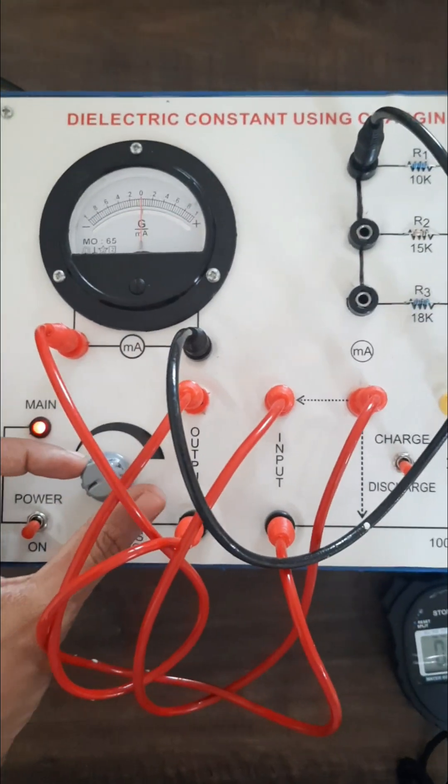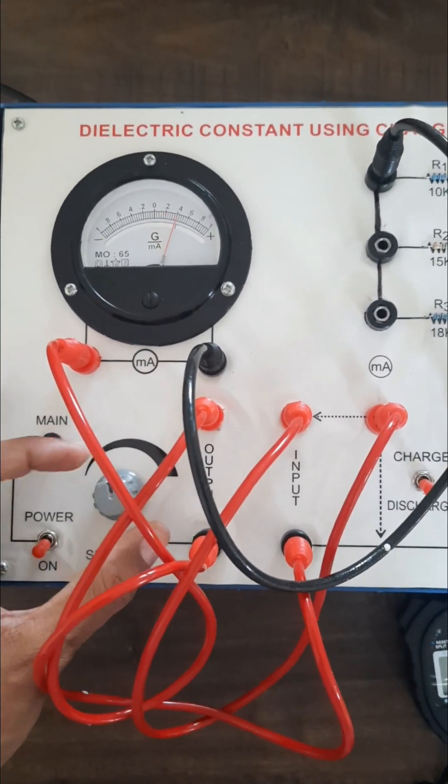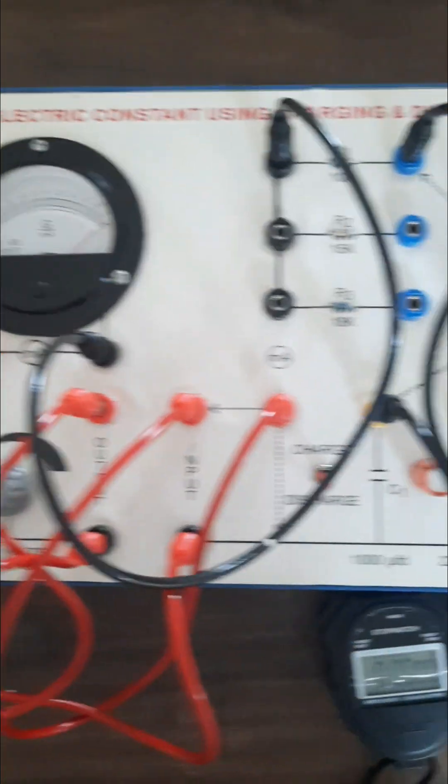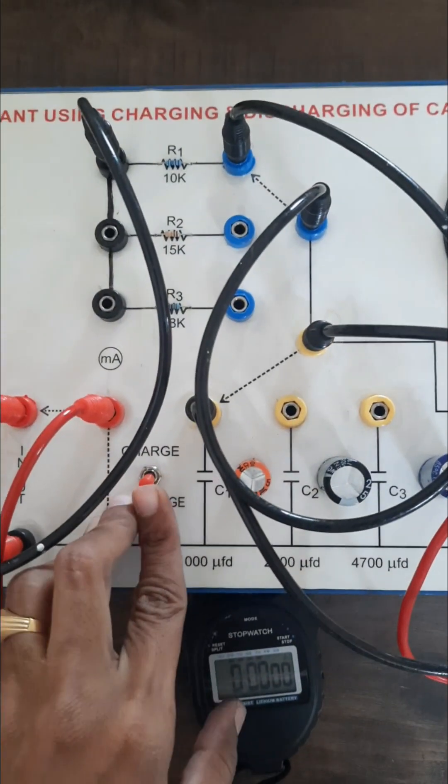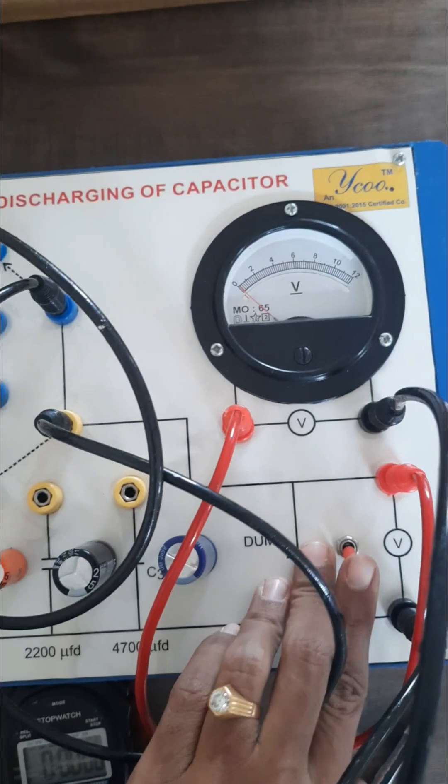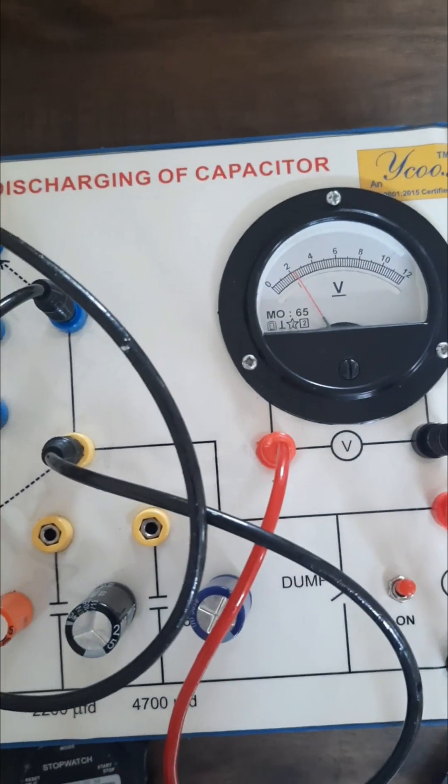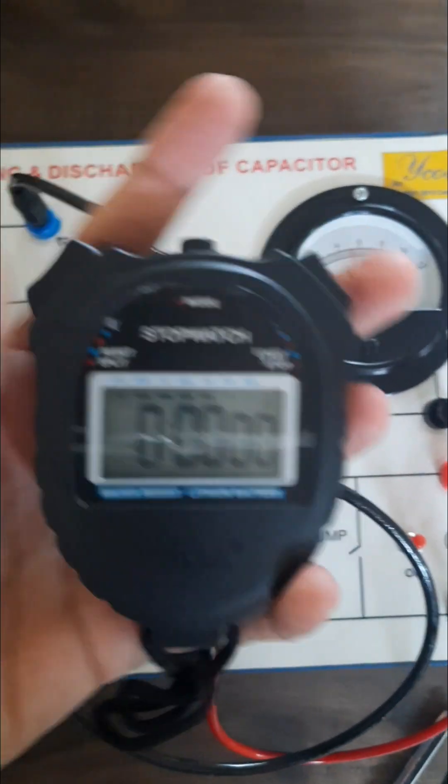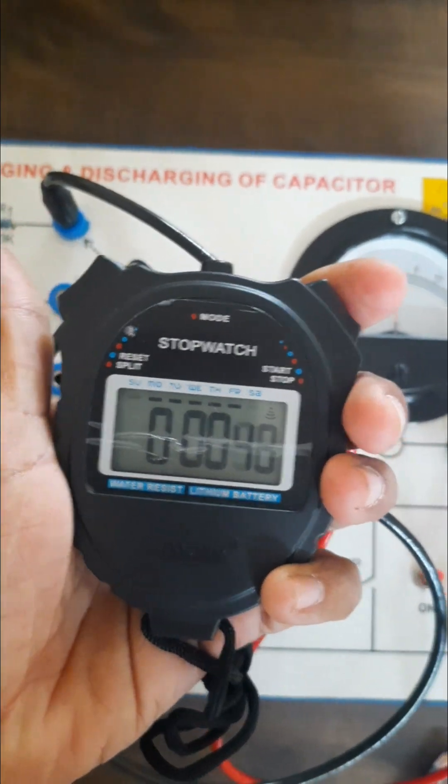Switch on the device, keep the voltage at maximum 12 volts for discharging, and keep it in the charging mode. Switch it on, and then you can see the voltage is gradually increasing. You should start the stopwatch for the increase at each 5 seconds.